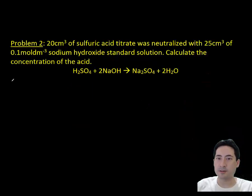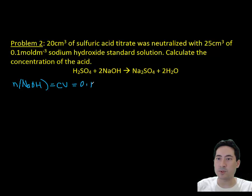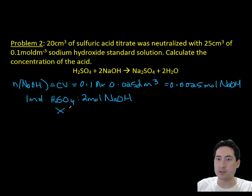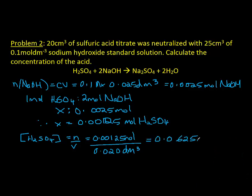Lastly is a proper titration calculation. This is what you should be doing when you do your titrations. We have 20 milliliters of sulfuric acid titrate was neutralized with 25 milliliters of 0.1 molar sodium hydroxide standard solution. We're trying to work out what the concentration of this sulfuric acid is. There's our equation that's been balanced. We ended up using 0.0025 moles of sodium hydroxide. That must mean that there was 0.00125 moles of H₂SO₄. By taking the volume there, we can now work out what the concentration of sulfuric acid was, which was 0.0625 moles.